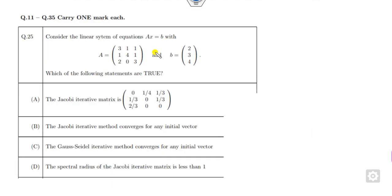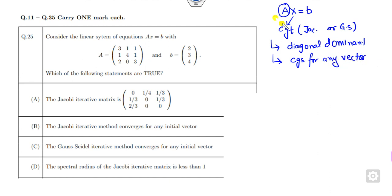Let's start with the first question which is related to the system Ax=b. Your target is to check whether the Jacobi and Gauss-Seidel methods converge or not. I will tell you when these methods converge. They will converge when your matrix A is diagonally dominant. Once you prove it is diagonally dominant, then it will converge for any initial vector.